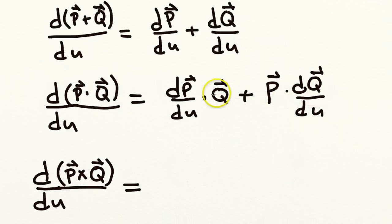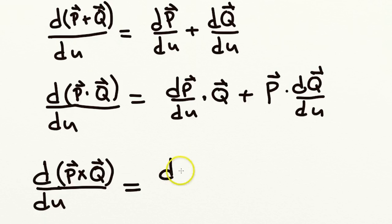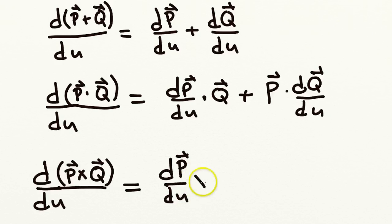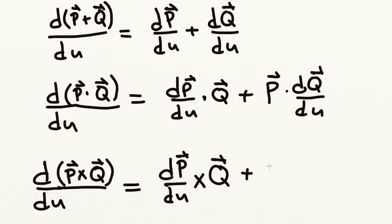Finally, we have the derivative of the cross product of two vectors. Similar to the above, we take the derivative of the first vector and take the cross product of that with the second vector, then take the first vector crossed with the derivative of the second vector.